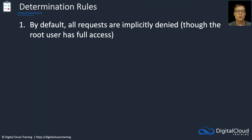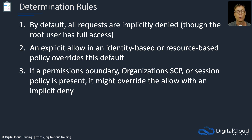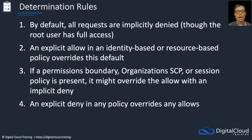The last slide before we look at the logical flow covers the determination rules. By default, all requests are implicitly denied, except for the root user who always has unrestricted access. For everyone else there's an implicit deny — if you don't have an allow permission, you're denied by default. An explicit allow in identity-based or resource-based policies will override that default. A permissions boundary, Organizations SCP, or session policy can override the allow with an implicit deny. And lastly, an explicit deny in any policy will always override any allows.